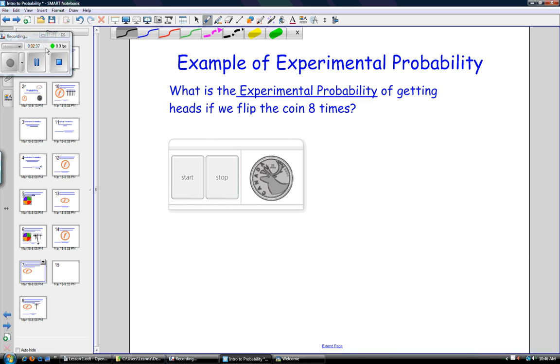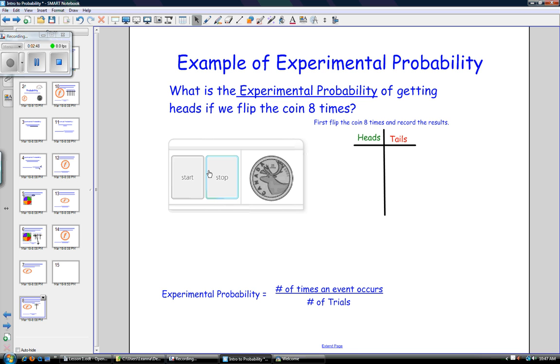My second example is, what is the experimental probability of getting heads if we flip the coin eight times? So, the first thing we do, again, is flip the coin eight times.